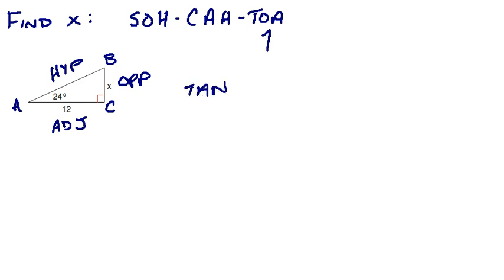So the tangent of angle a is equal to our opposite over our adjacent. So tangent of 24 degrees equals our opposite, which is x, over 12, which is our adjacent.